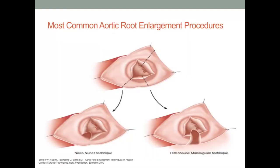Posterior enlargement of the aortic root is accomplished by either the Nicks or Manouguian techniques. The Nicks method is a vertical incision through the commissure between the left coronary cusp and the non-coronary cusp extending down into the interleaflet triangle. The Manouguian method is a vertical incision through the mid portion of the non-coronary sinus, through the aortic annulus and into the anterior leaflet of the mitral valve and the roof of the left atrium. Both approaches are arguably the most commonly accepted and widely used techniques for aortic root enlargement.